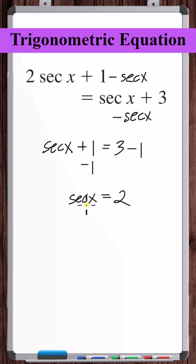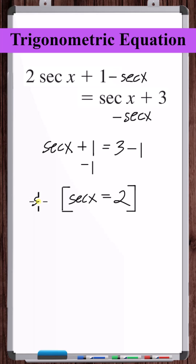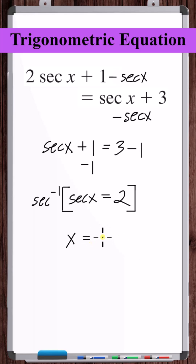Now, to solve for x, we can take the inverse secant of both sides of this equation. Inverse secant of secant x is just x, and on the right side we have inverse secant of 2.